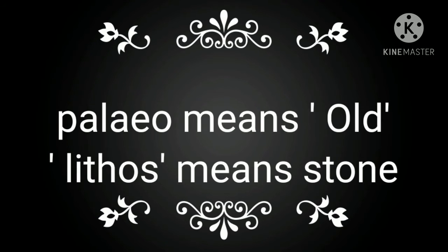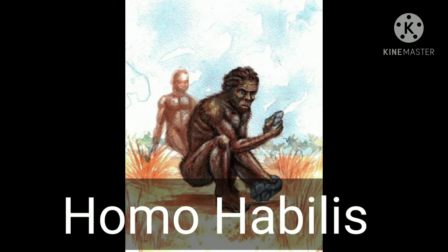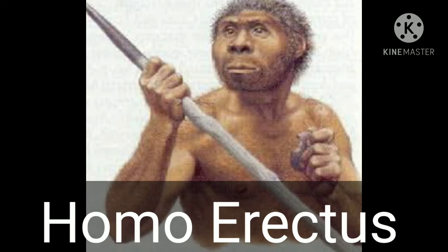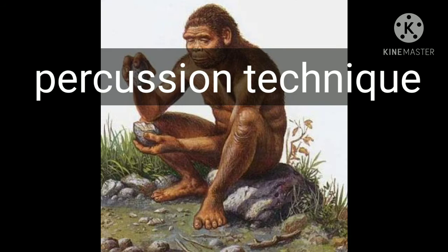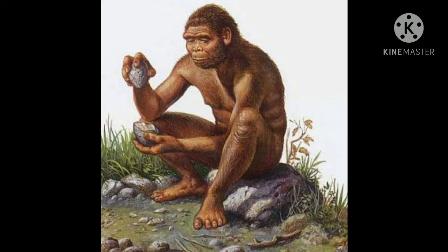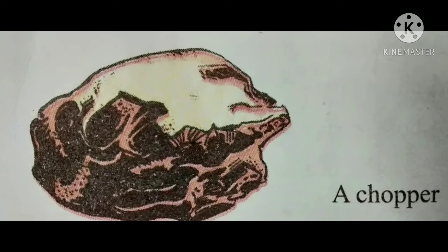The word 'paleo' means old and 'lithos' means stone. Homo habilis and Homo erectus, who belong to the Old Stone Age, both made their tools using the percussion technique. This technique involves beating or striking one large pebble against another to obtain stone flakes. The first tools made in the Old Stone Age with this technique were crude.